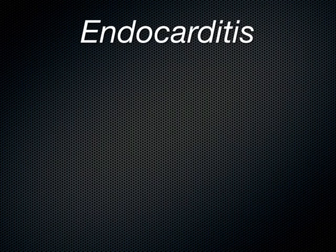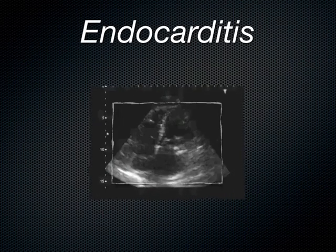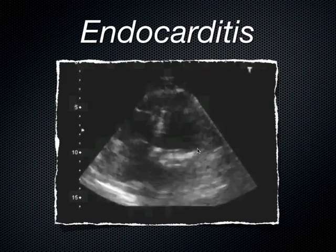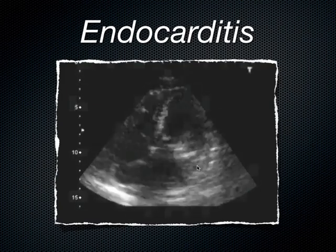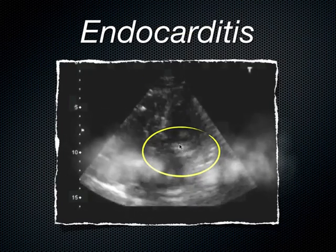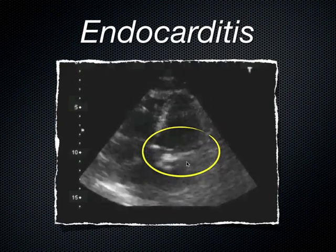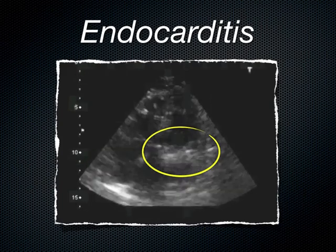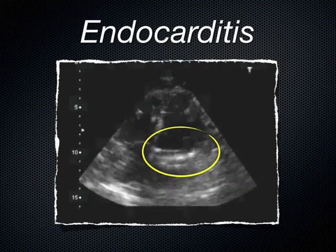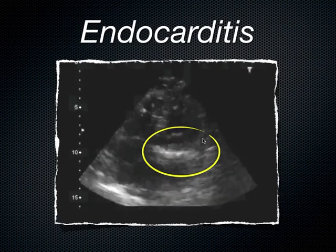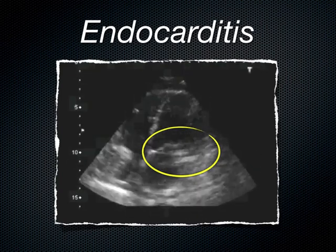Moving on to another cause of fever: endocarditis, where one of the heart valves actually gets infected. This is most commonly from using IV drugs, where bacteria gets into the blood and makes its way to the right or even left heart — most commonly the tricuspid valve, but occasionally the mitral valve. This is a case of a mitral valve with a vegetation on it — we can see this vegetation right here, attached to the mitral valve. This is the apical four-chambered view in a patient who has endocarditis.